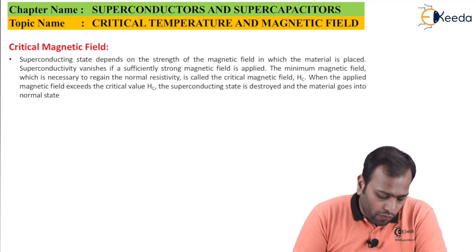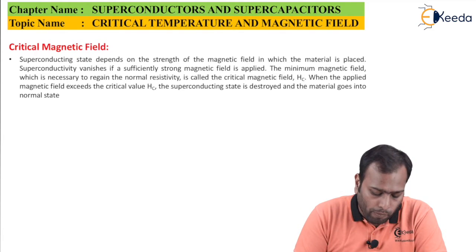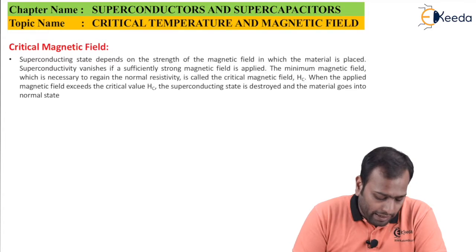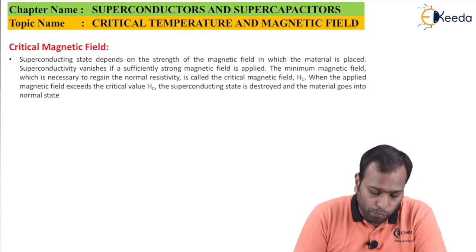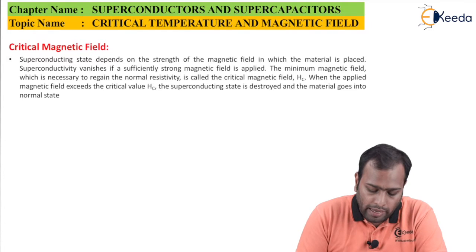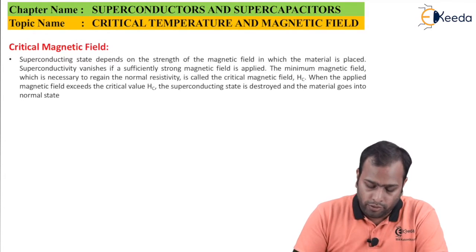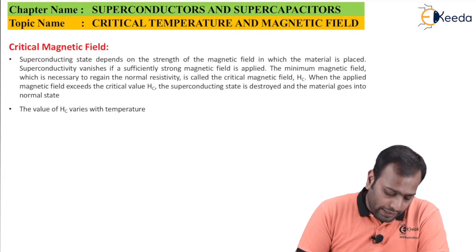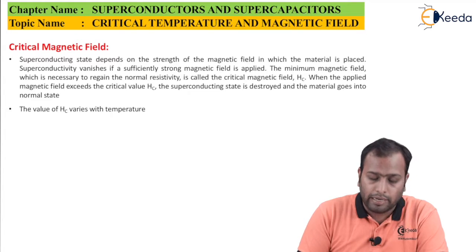The minimum magnetic field which is necessary to regain the normal resistivity is called as the critical magnetic field, which we denote as HC. When the applied magnetic field exceeds the critical value HC, the superconducting state is destroyed and the material goes into the normal state. So basically, the value of HC also depends on temperature.